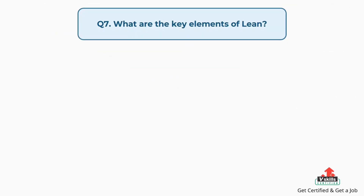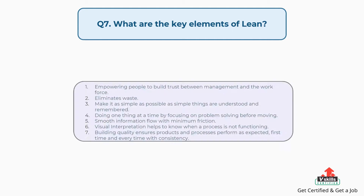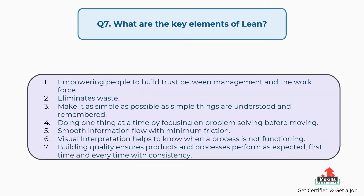Question number seven: what are the key elements of lean? The answer is: 1, empowering people to build trust between management and the workforce. 2, eliminates waste. 3, make it as simple as possible, as simple things are understood and remembered. 4, doing one thing at a time by focusing on problem solving before moving.